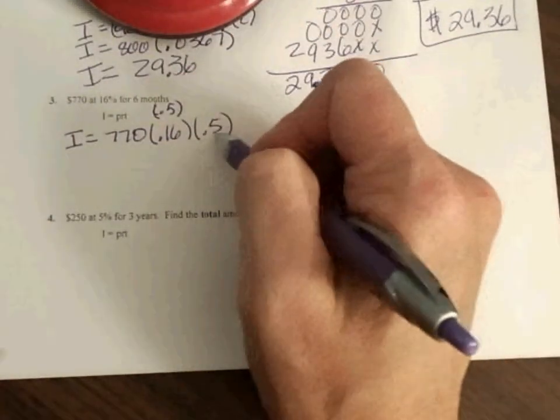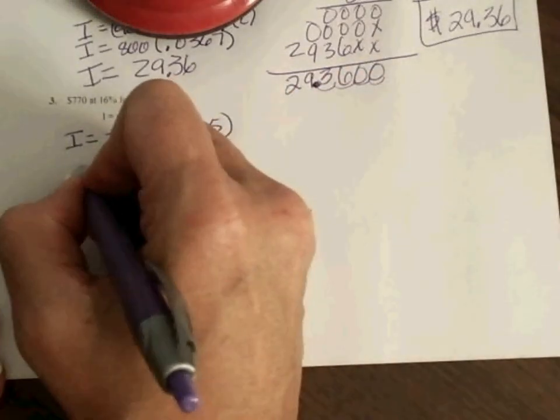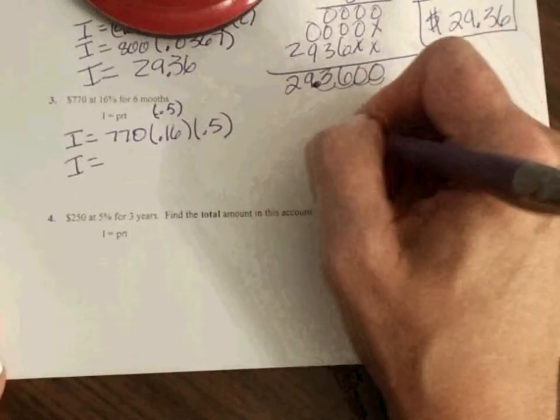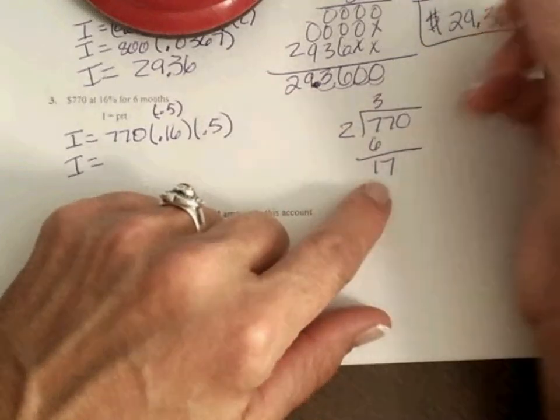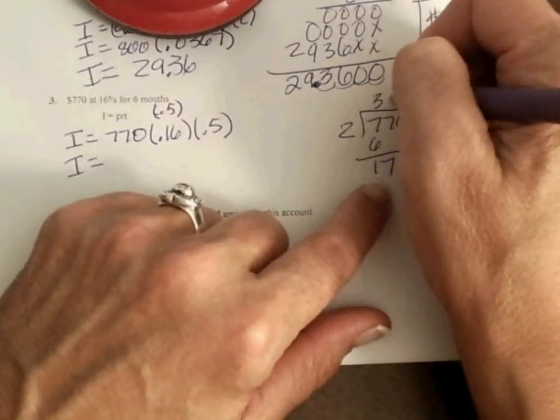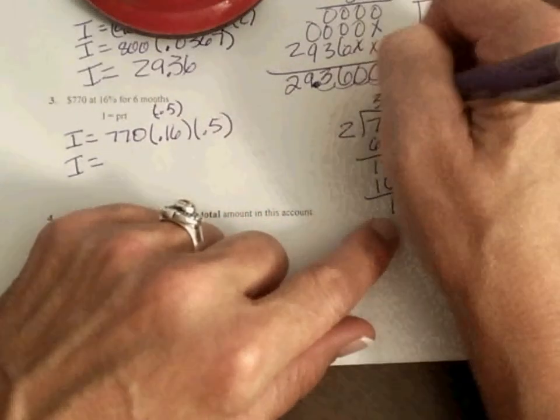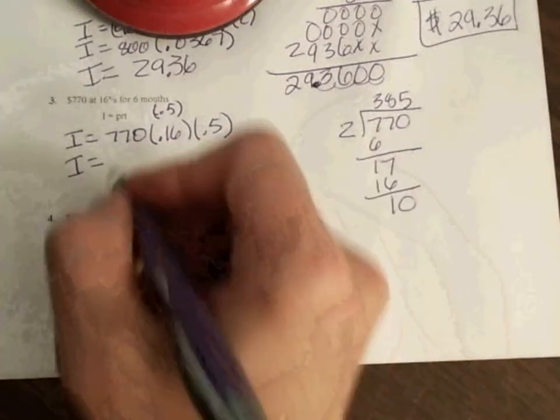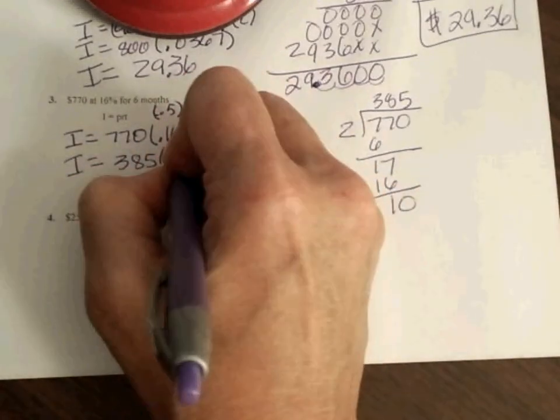Now I know if I multiply by 0.5, it's really, I'm halving the 770. So I'm going to do that first. That's okay. 2 into 7 goes 3 times. 2 into 17 goes 8 times. And 2 into 10 goes 5. So this is 770 times 0.5, or divided by 2, is 385. Now I'm going to multiply by my 0.16.